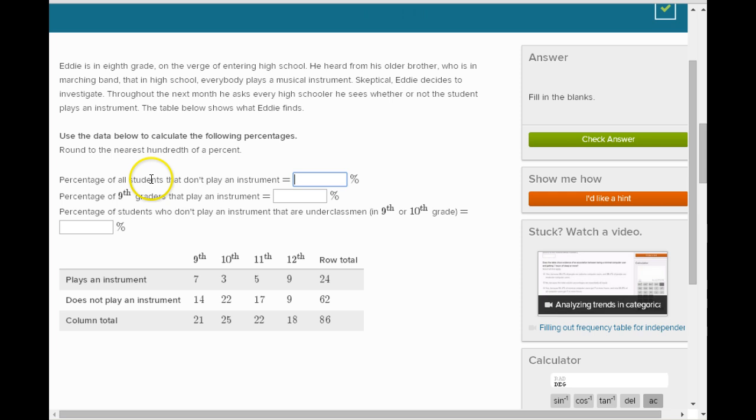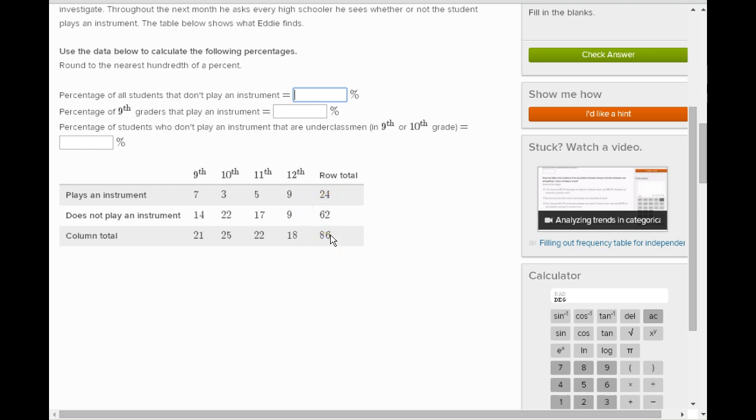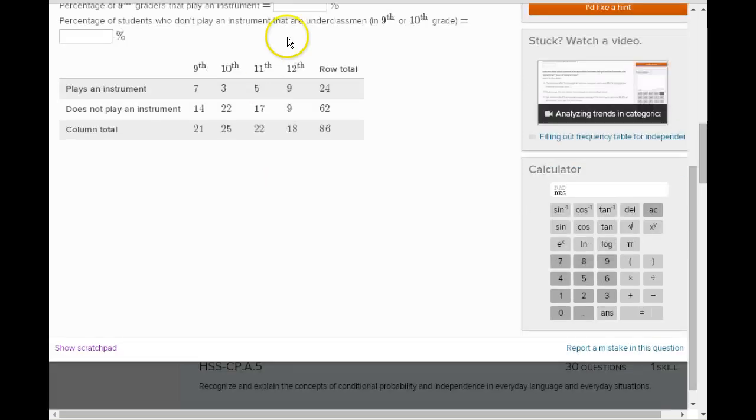Okay, we can add up and get a total of ninth, tenth, eleventh, and twelfth graders. We get a total of all the ones that do and all the ones that do not play instruments. All right, so the percentage of all students that don't play an instrument. So the percent of all students, there's 86, so what percent is it that do not play an instrument? So a percent of 86 is 62. Let me show you how I do this kind of, sometimes I write it out like this.